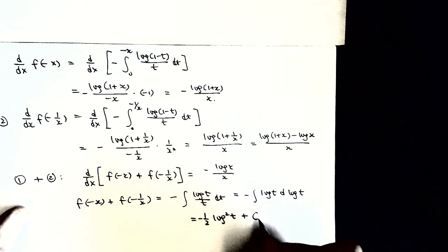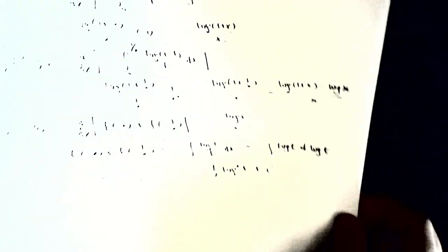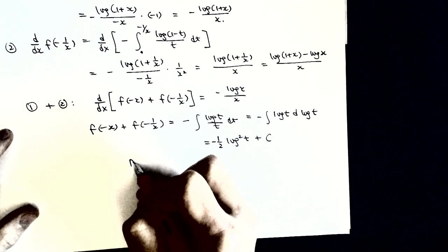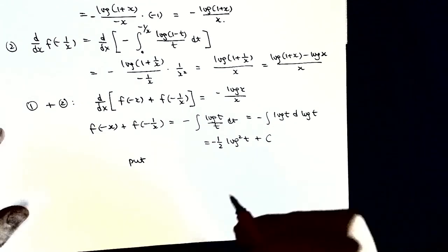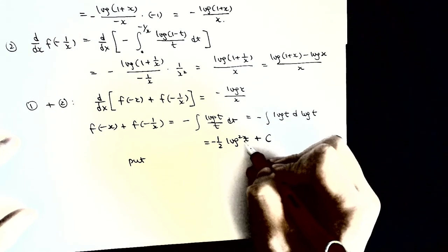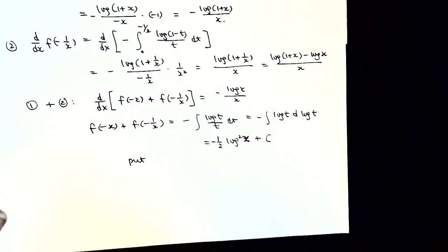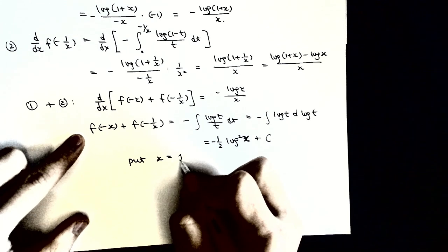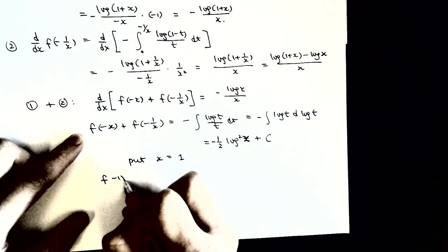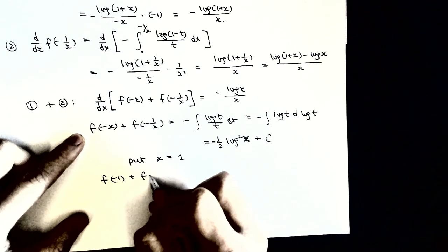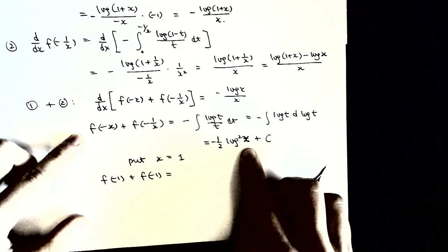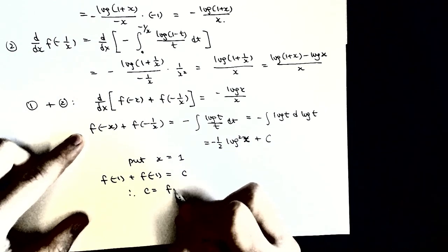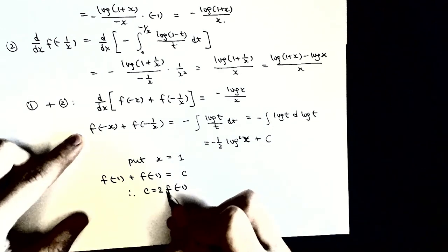Now we want to find the value of C. There is a correction: it should be x here. We put some values inside this equation. We put x equal to 1. This will become f(minus 1) plus f(minus 1) equals minus one half log squared(1), which is 0, so it equals C. Therefore C equals 2 times f(minus 1). So we now have a very interesting functional equation about f.